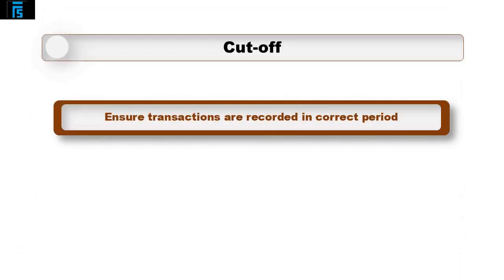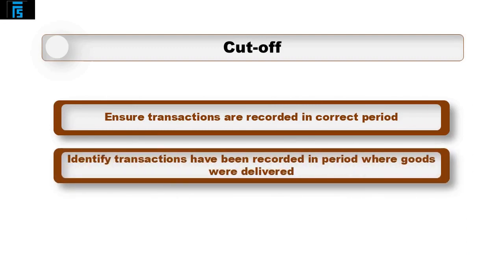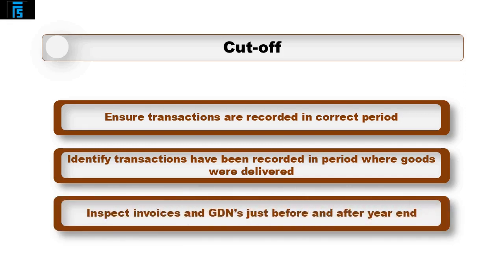Finally, cutoff is to ensure transactions are recorded in the correct financial period. Audit tests are designed to identify if sales and purchase invoices have been recorded in the period where the goods were delivered or dispatched. An example would be to inspect the goods dispatch notes just before and after the year end and compare to the sales invoice recorded. If the delivery date is before the year end, the sale should be recorded this year; if after, it should be recorded in the following year.